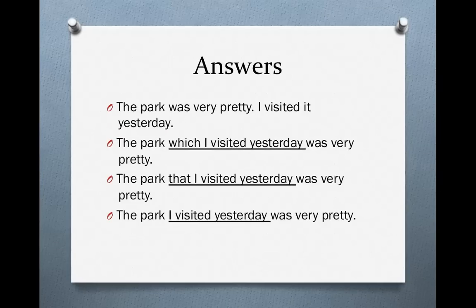For the next group: 'The park was very pretty. I visited it yesterday.' It and the park refer to the same thing — so we're talking about a thing, not a person, meaning we need to use which or that. Which is going to replace it, so we say: 'The park which I visited yesterday was very pretty.' Which is the relative pronoun, I is the subject, visited is the verb, and all of the words together are an adjective clause that describes the park. We could also say 'The park that I visited yesterday was very pretty.' And finally, we can delete the relative pronoun because it was replacing an object pronoun and we have a subject and a verb — 'I visited yesterday' works, so we don't need a relative pronoun.